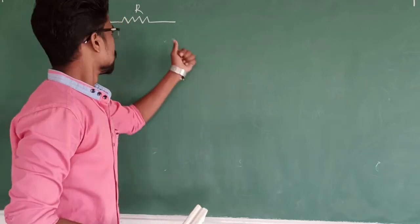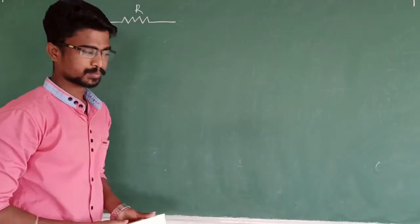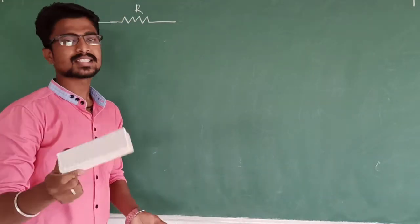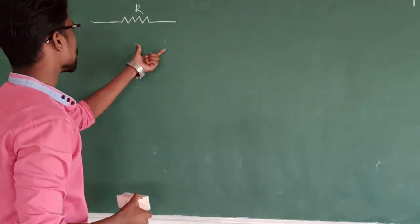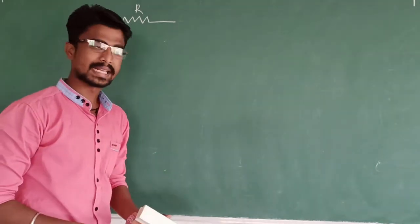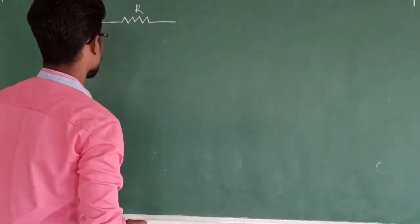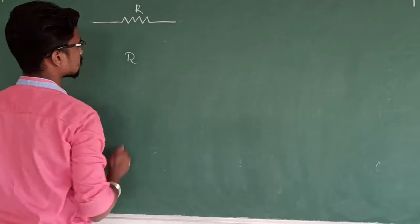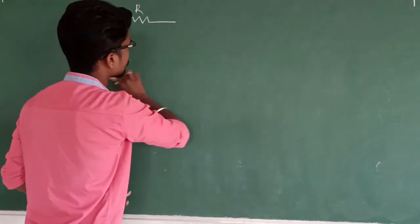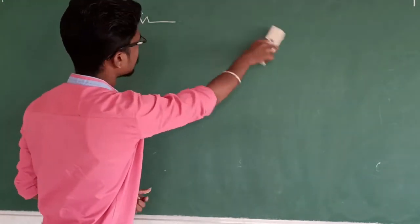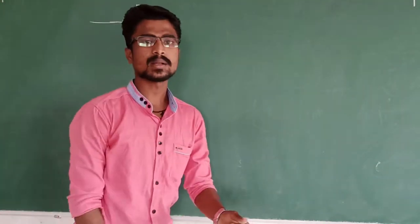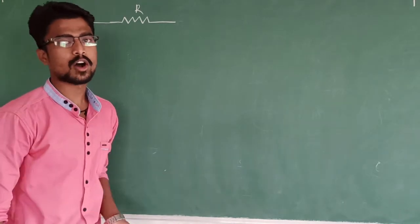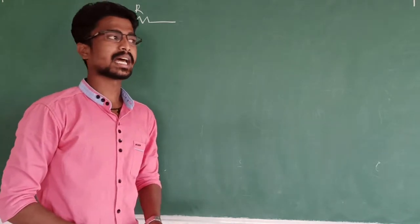What is a resistor? A resistor is a material of known resistance — we know the value of that resistor beforehand. And what is resistance? Resistance means it is the opposition to the flow of current.